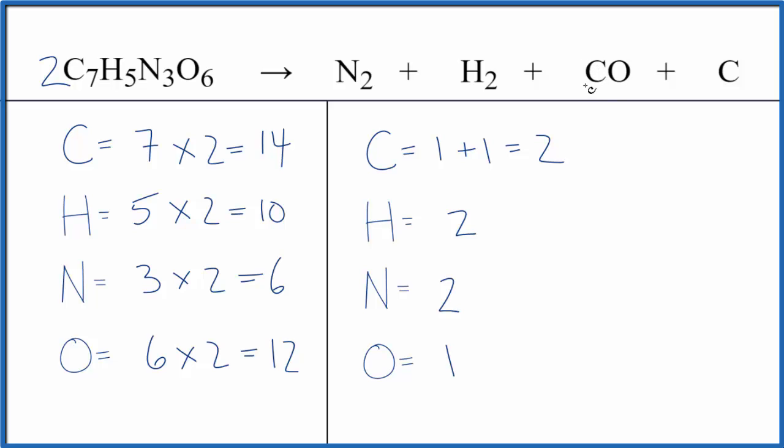If I look at the carbons again, I'm trying to figure out which one should I change. But the oxygens, I know I'm going to need a 12 here because one times 12, that would give me 12 oxygens. That would balance the oxygens.